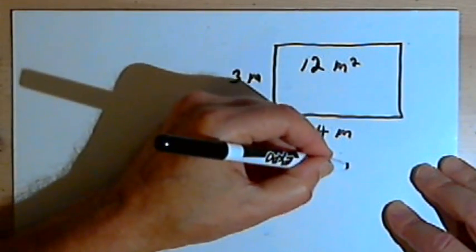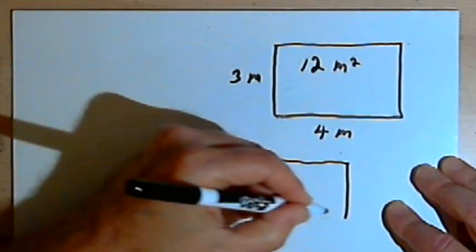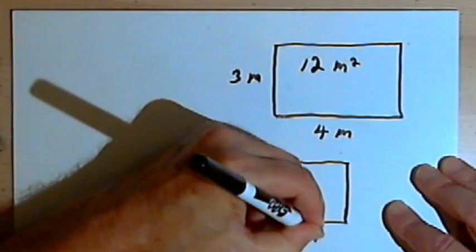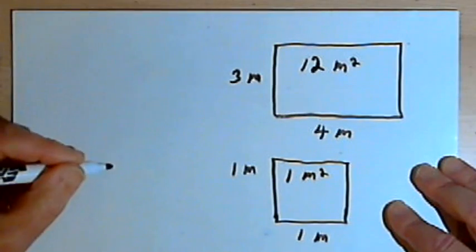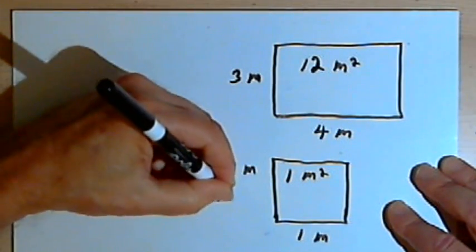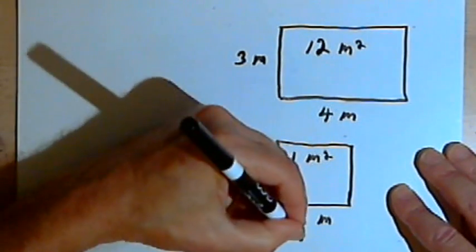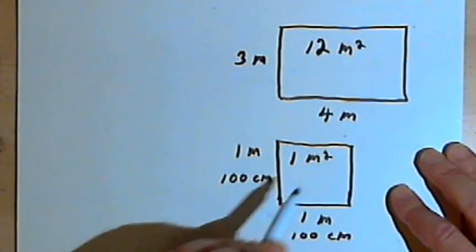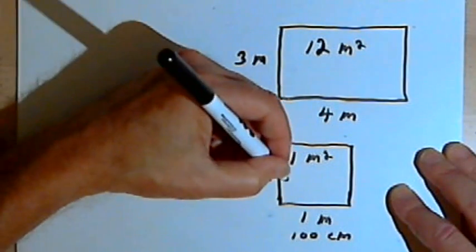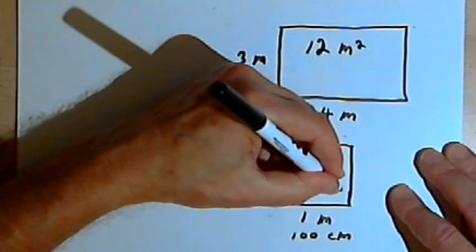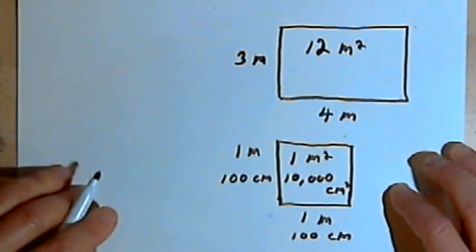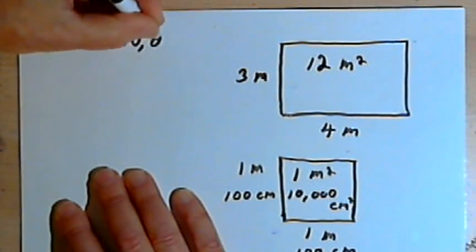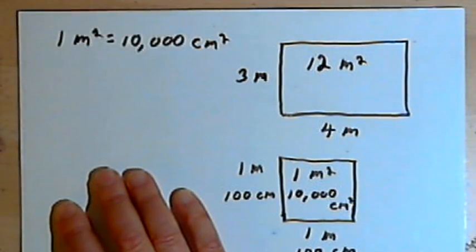I want to know how many square centimeters that is, so I'll find the relationship between square meters and square centimeters. If I have a square that's 1 meter by 1 meter, its area is 1 square meter. 1 meter is the same as 100 centimeters, so the area would be 100 centimeters times 100 centimeters, or 10,000 square centimeters. So 1 square meter equals 10,000 square centimeters.